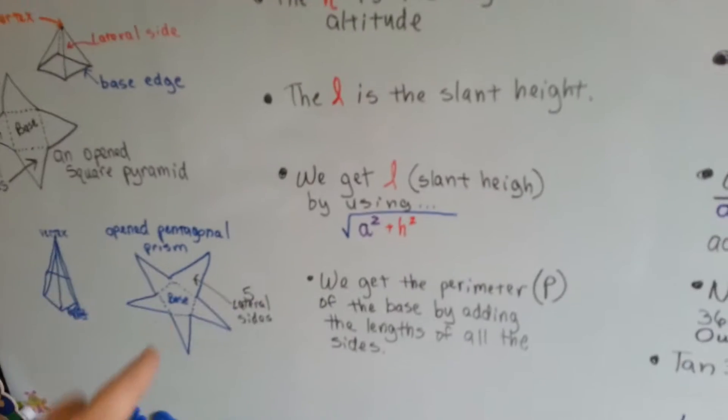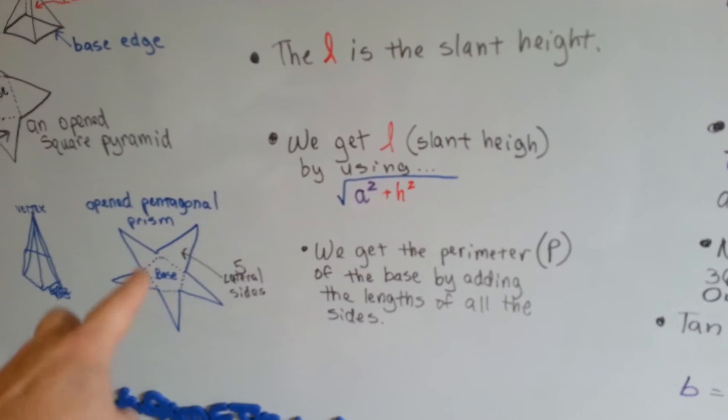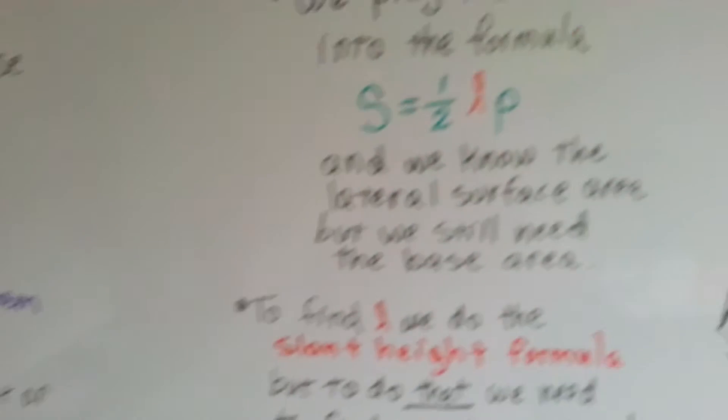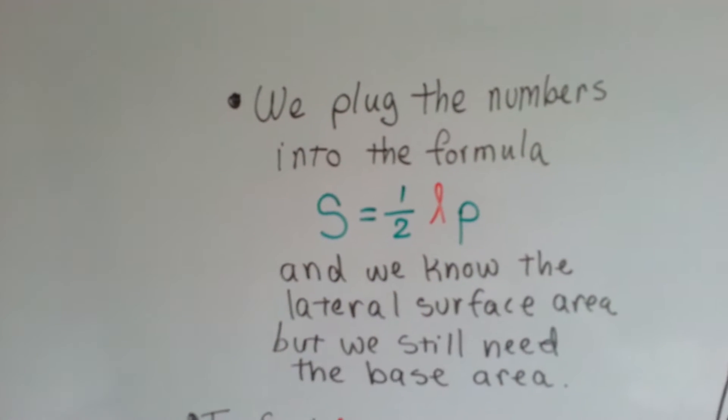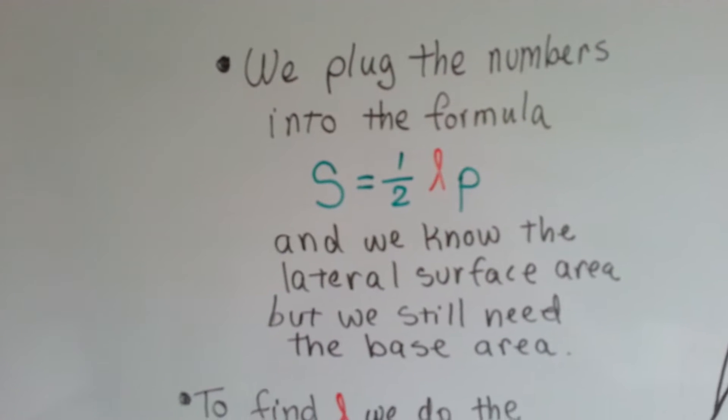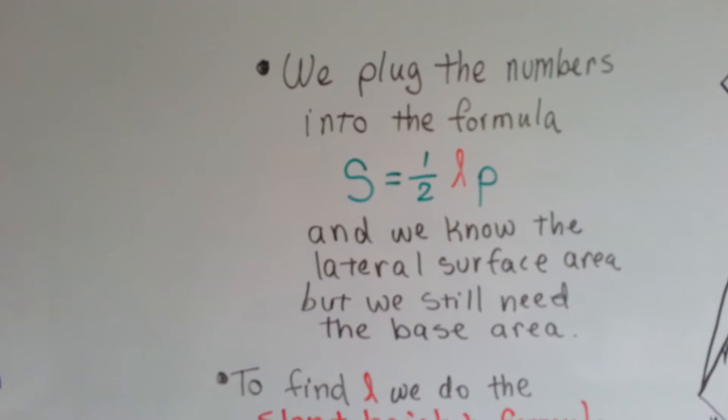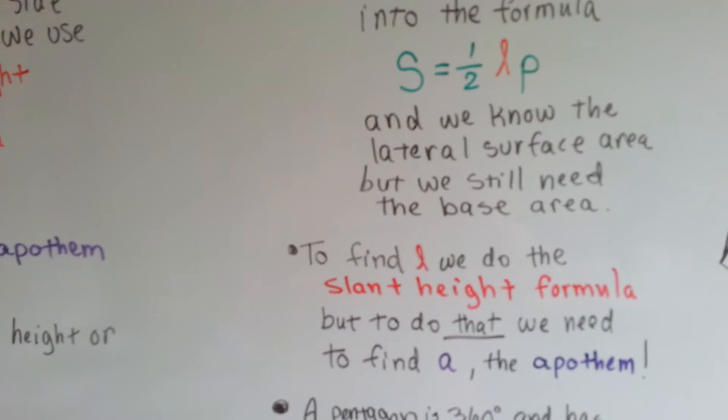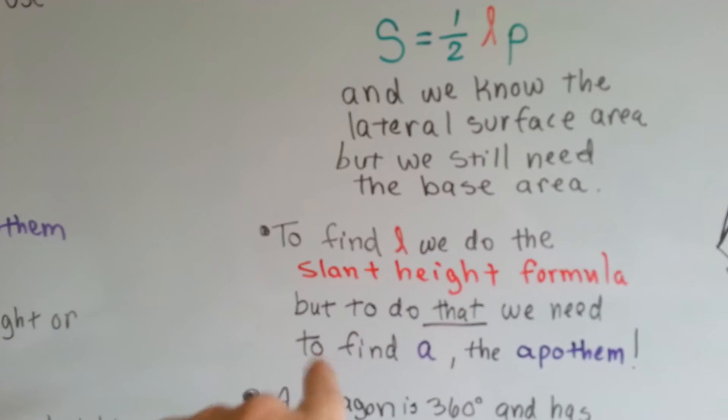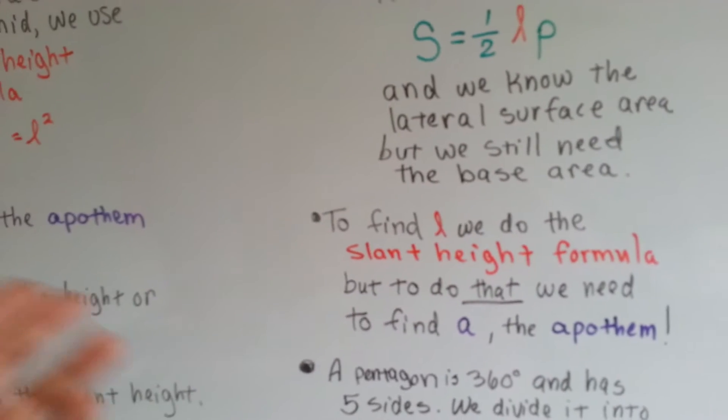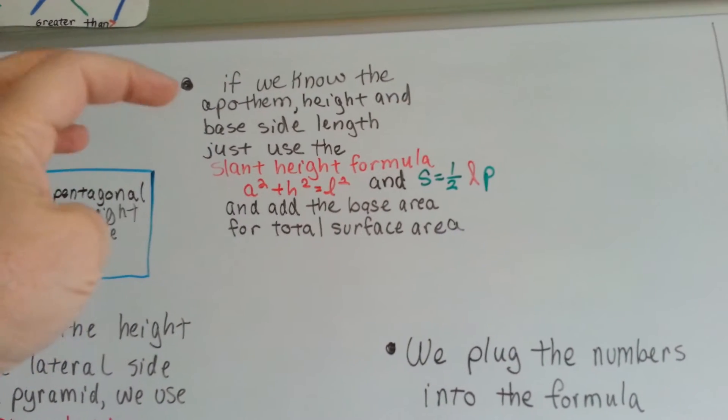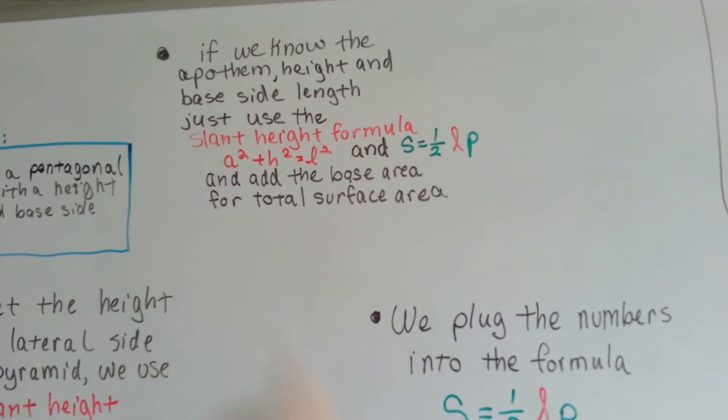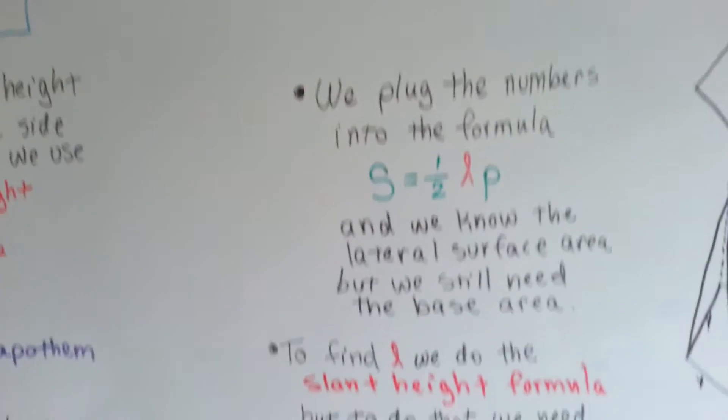We get the perimeter of the base by just adding how much they are all the way around. So, if we know each side base is four, we know the perimeter is twenty, because four times five is twenty. We plug the numbers into this formula of s equals half slant height times perimeter, and we know what the lateral surface area is, but we still need to add the base area to it. So, before we can do this, we need to find out what the slant height is with the slant height formula. But before we can do that, we need to find out what the apothem is. If you already know what it is, you can just plug the information into the formulas, and get your total surface area. If you don't have this information and you only have partial information, keep following me.